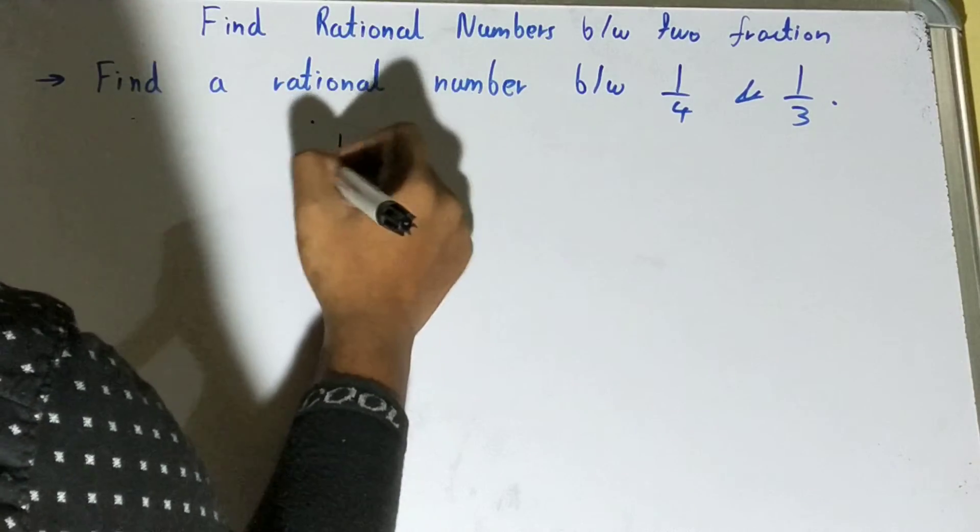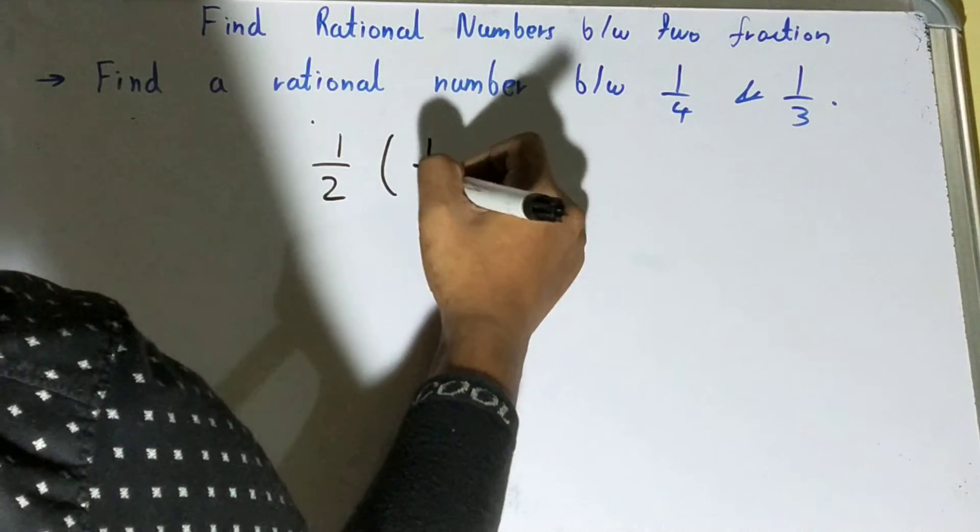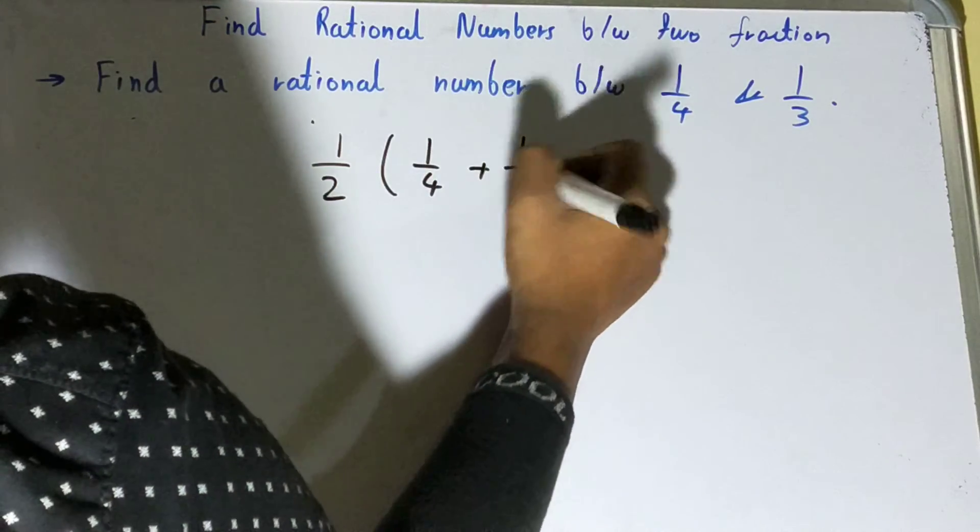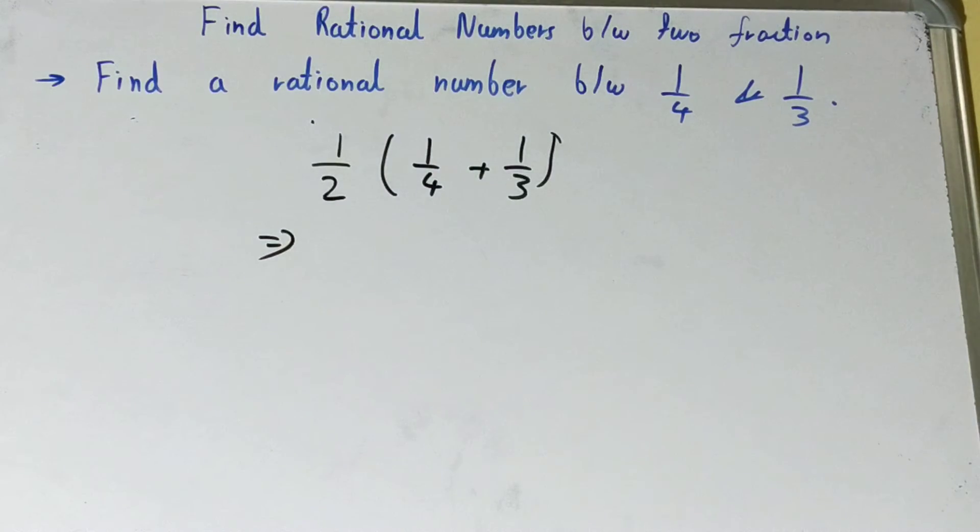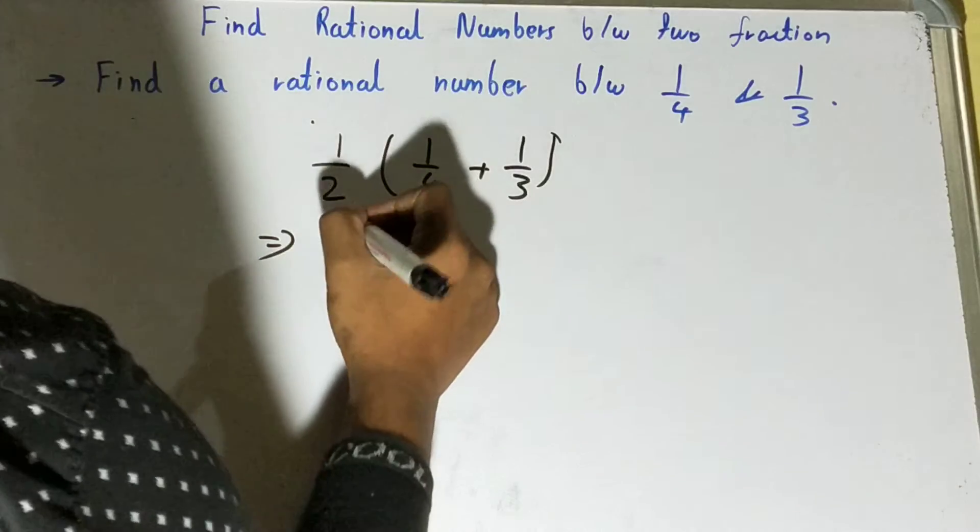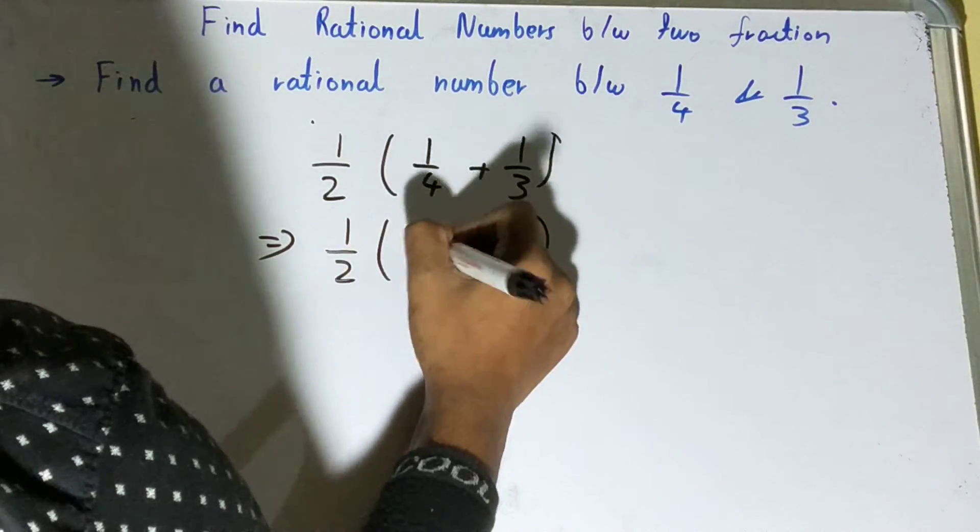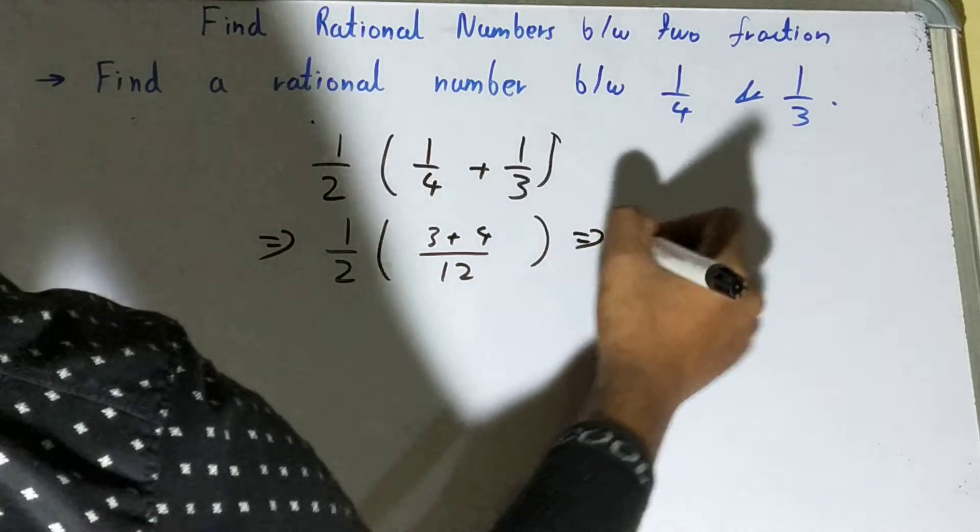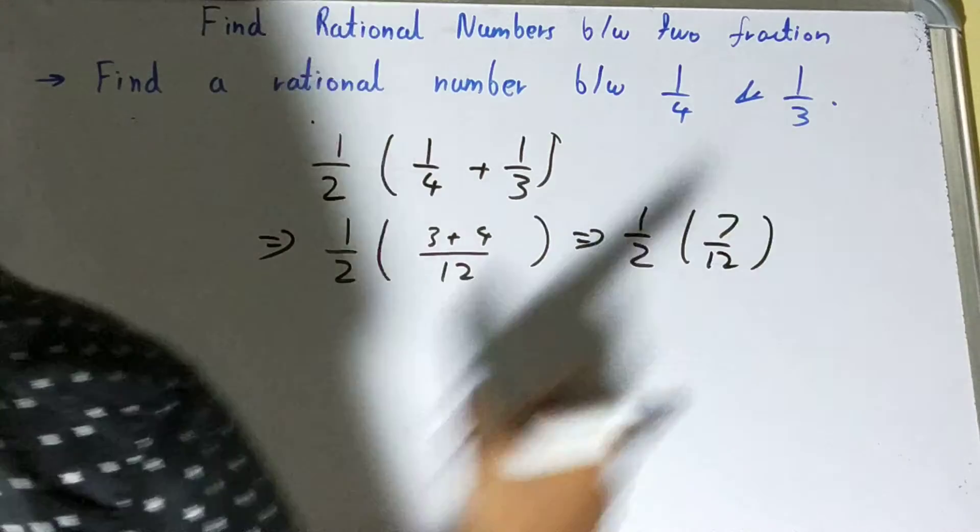This will give us the mid value of these two fractions. That will be our new rational number. So one by two times, one by four plus one by three, that's one by two times seven by twelve.